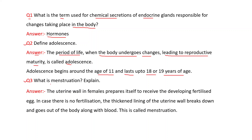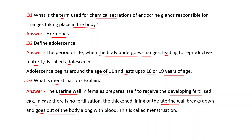Third question: What is menstruation? Explain. Answer: The uterine wall in females prepares itself to receive the developing fertilized egg. In case there is no fertilization, the thickened lining of the uterine wall breaks down and goes out of the body along with blood. This is called menstruation.